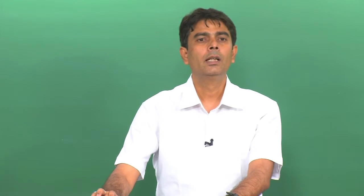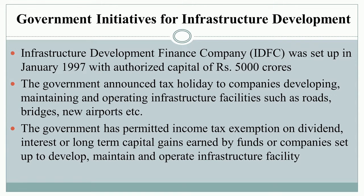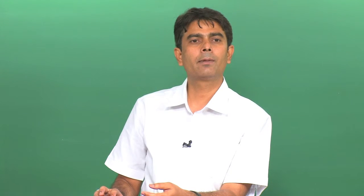The Indian economy, which was much bigger, continued its backwardness in infrastructure compared to many smaller Asian economies in the early phase of reforms. Government initiatives for infrastructure development included setting up the Infrastructure Development Finance Company in January 1997 with authorized capital of 5,000 crores. The government announced tax holidays to companies developing, maintaining, and operating infrastructure facilities such as roads, bridges, and new ports, and permitted income tax exemption on dividends, interest, or long-term capital gains earned by infrastructure development funds.